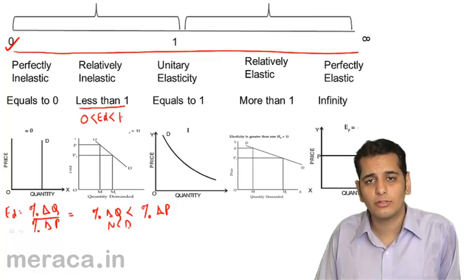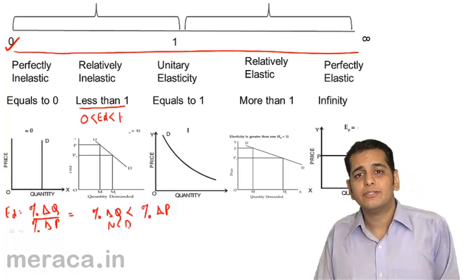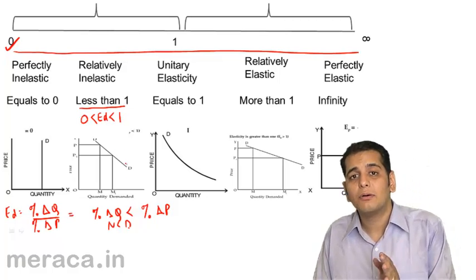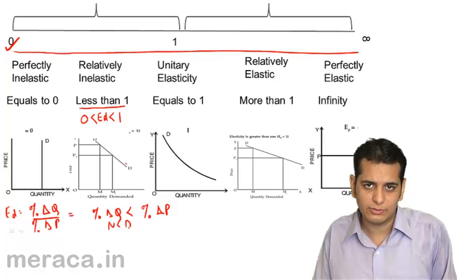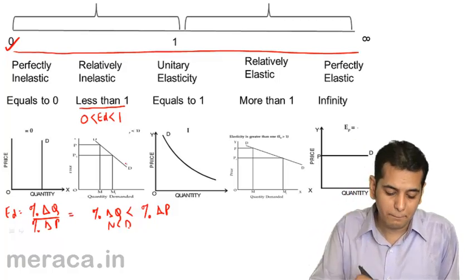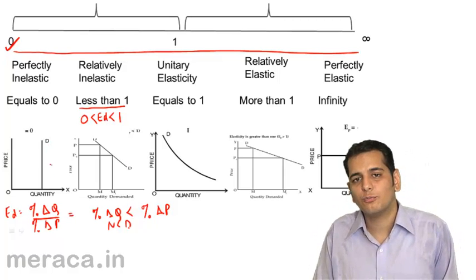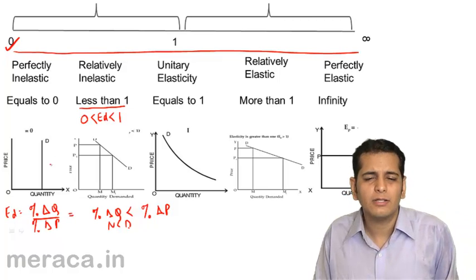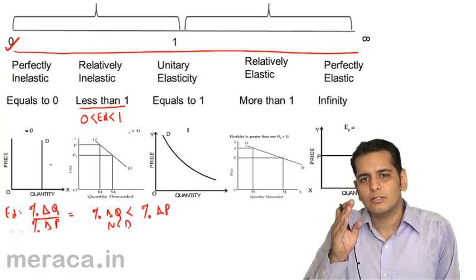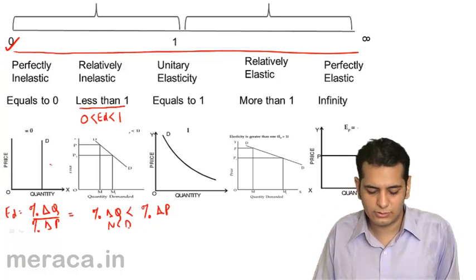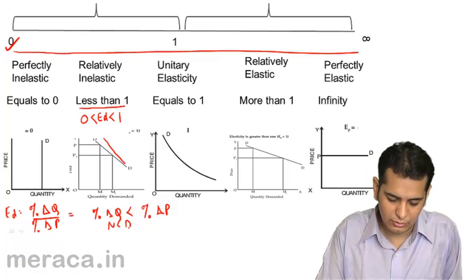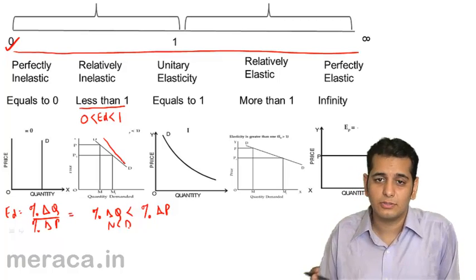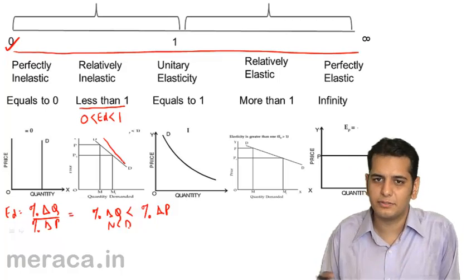How does the curve look on the graph? It is a steeper curve. It has more tendency towards the y-axis. It is not perfectly parallel to the y-axis as in perfectly inelastic, but it is tilted slightly towards the y-axis. The slope is steeper in this case.